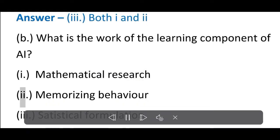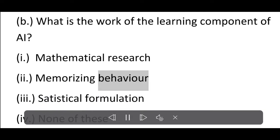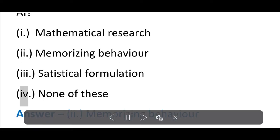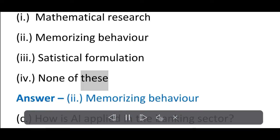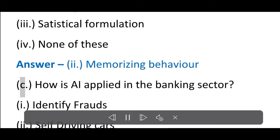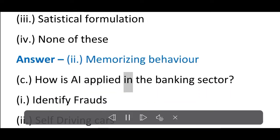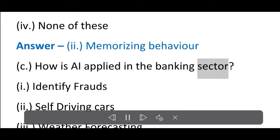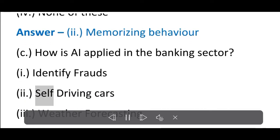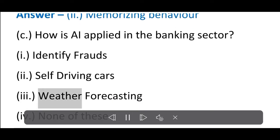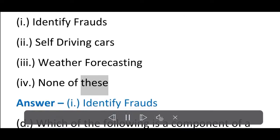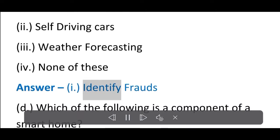B. What is the work of the learning component of AI? (i) Mathematical research, (ii) Memorizing behavior, (iii) Statistical formulation, (iv) None of these. Answer: (ii) Memorizing behavior. C. How is AI applied in the banking sector? (i) Identify frauds, (ii) Self-driving cars, (iii) Weather forecasting, (iv) None of these. Answer: (i) Identify frauds.